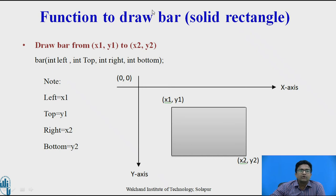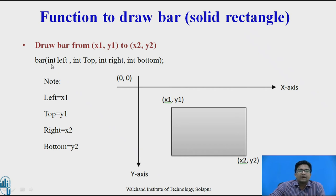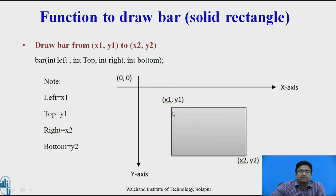The next function is how to draw a bar. The bar function is used for drawing bar charts. We need to pass the parameters: int left, int top, int right, and int bottom. Here, left is x1, top is y1, right is x2, and bottom is y2. Let us see the example.